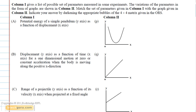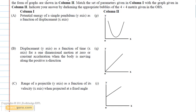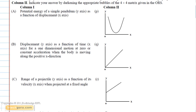Let us first solve question A. A condition is given for a simple harmonic motion, i.e. a simple pendulum. The potential energy for a simple harmonic motion is always directly proportional to the square of the displacement. Therefore, option P is the correct answer for question A.